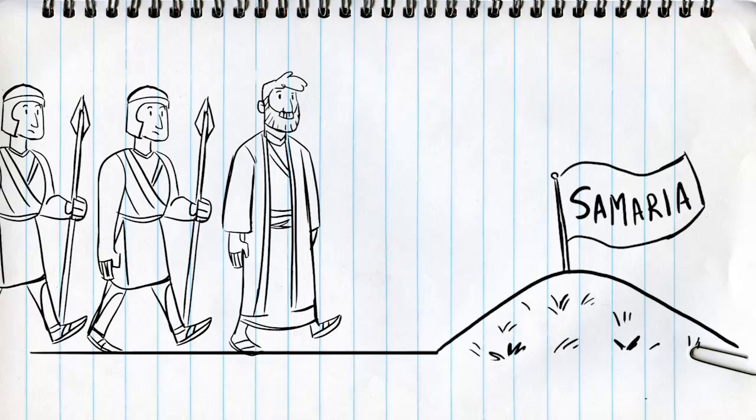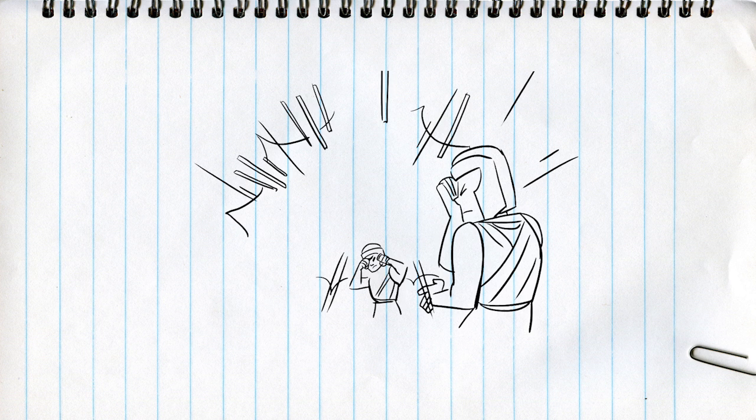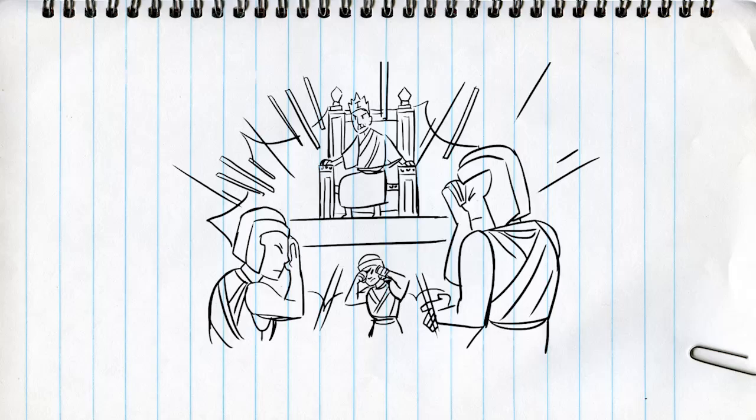As they entered the city, Elisha prayed from afar. God, open their eyes so that they see where they are. The king of Israel wanted to defeat the Aramean army. But Elisha had other plans. Send the army back to their king and get ready to prepare them a feast.